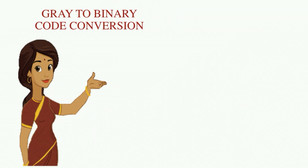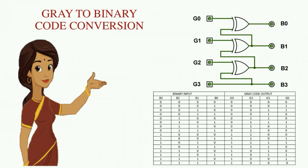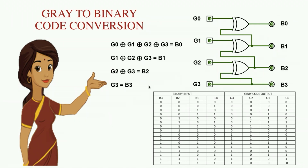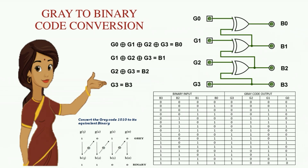Now we are going to perform gray to binary code conversion. This logic diagram is very similar to binary to gray code conversion. Let's take gray code 1010 as an example. The first gray code bit G3 is retained as B3. Then B3 is XORed with the next gray code bit G2 to get binary bit B2, and this process continues to convert gray code to its corresponding binary code.